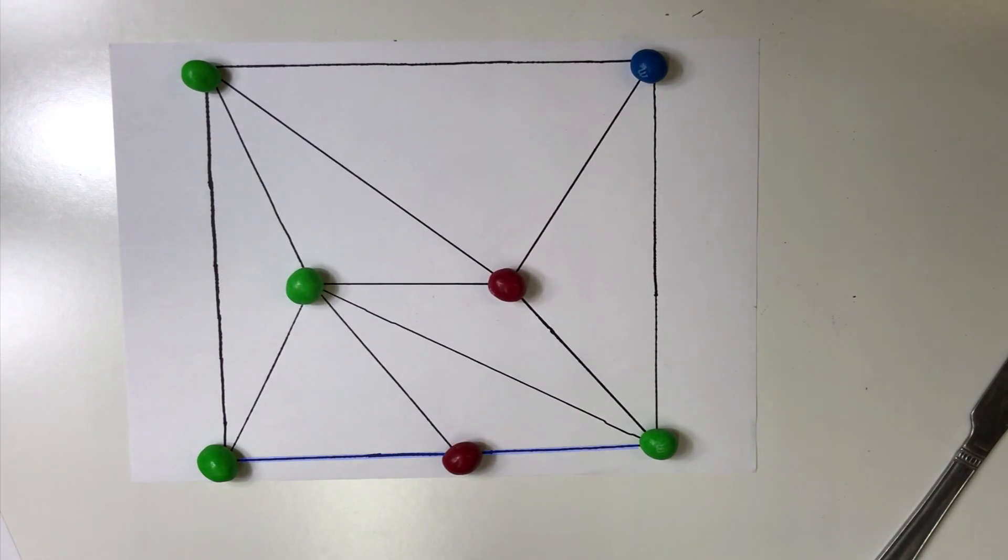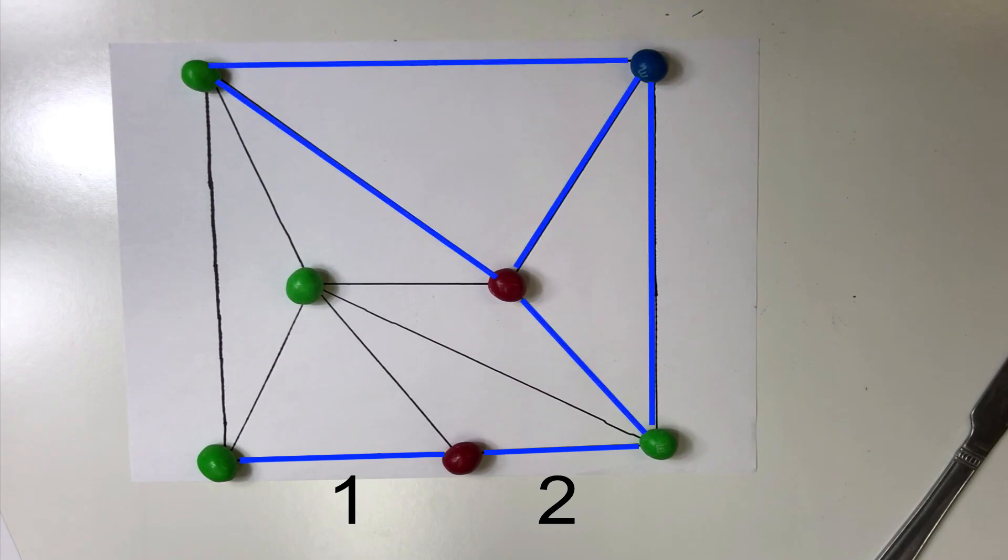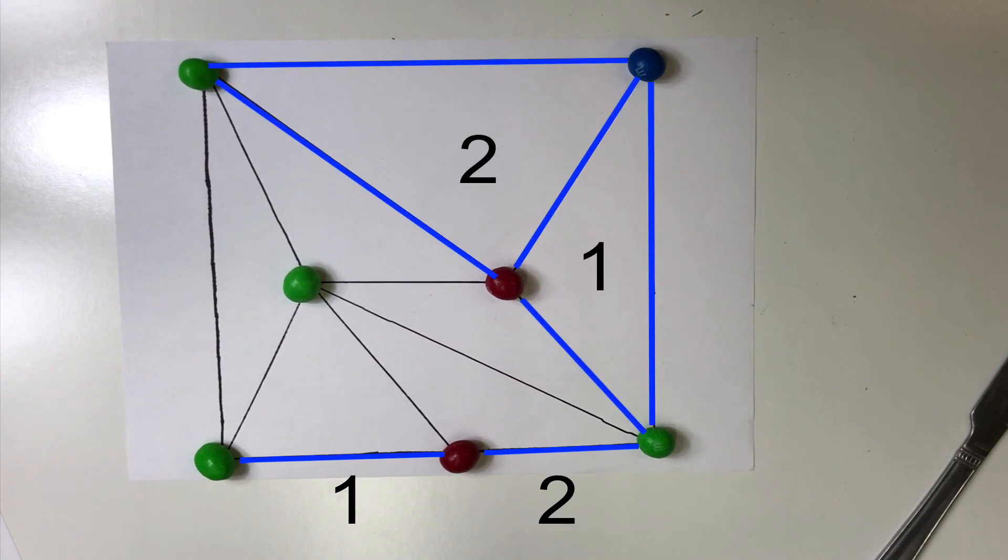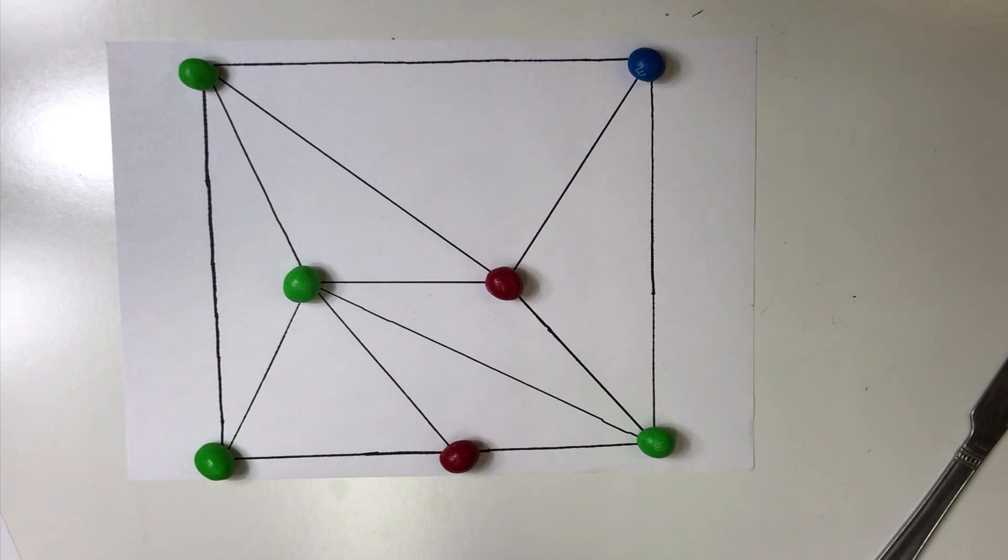No matter how we color the vertices, the number of red-green edges on the perimeter and the number of red-green-blue triangles are either both even or both odd.